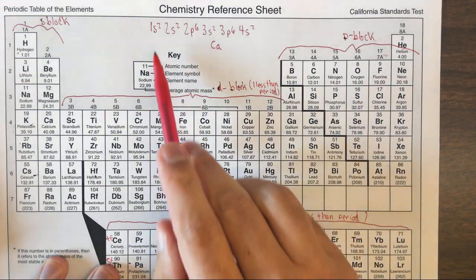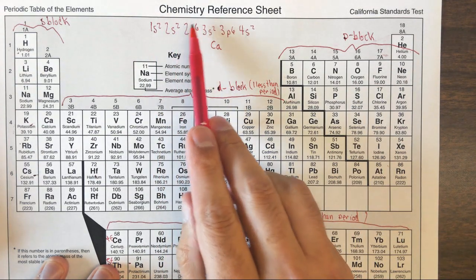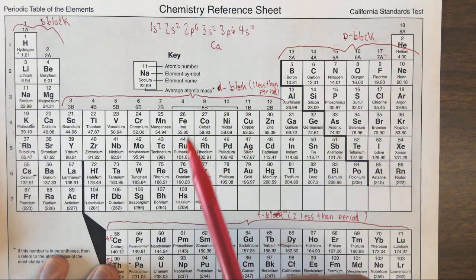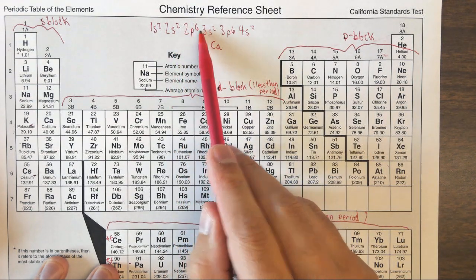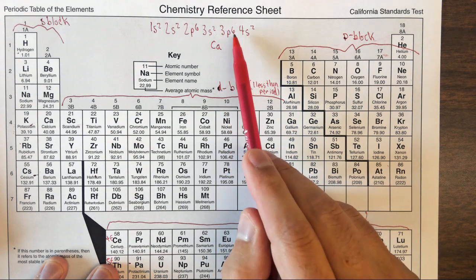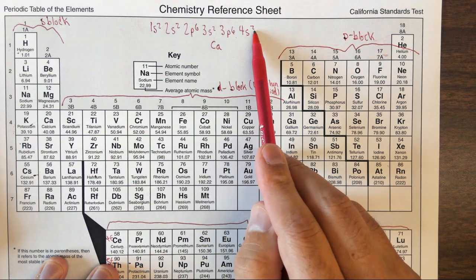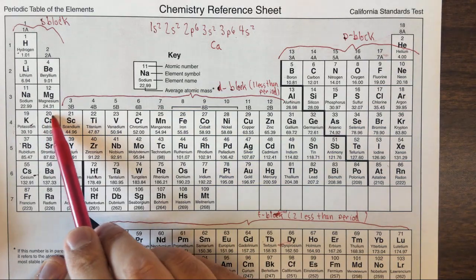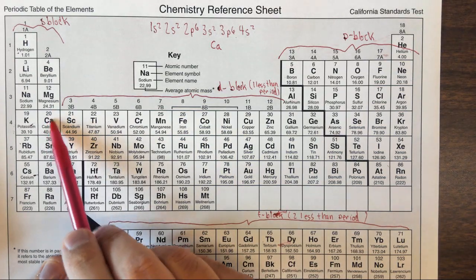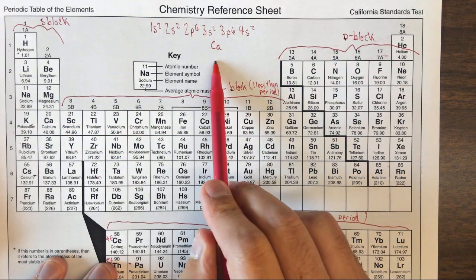Another way to do this would be to just add up all these superscripted numbers, because those are the number of electrons. And since this is a neutral atom, 2 plus 2 is 4, plus 6 is 10, plus 2 is 12, plus 6 is 18, plus 2 is 20. A neutral atom with 20 electrons must have 20 protons. So if we go to atomic number 20, we find calcium.